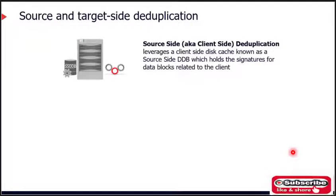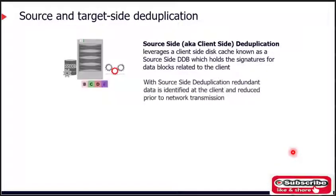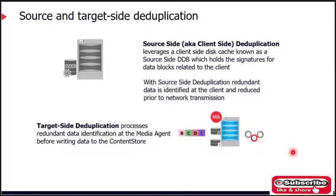Source-side deduplication, also commonly known as client-side deduplication, leverages a client-based disk cache known as the source-side deduplication database, which contains signatures for the data blocks related to that particular client. With source-side deduplication, data is identified at the client and is reduced prior to sending that data across the network. Target-side deduplication, on the other hand, conducts the comparison process via a deduplication database resident on a media agent, prior to writing the data to the storage target.